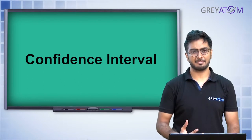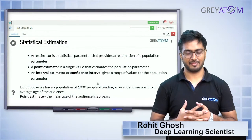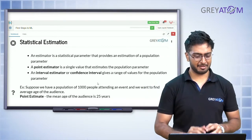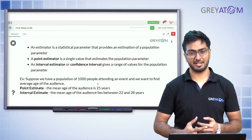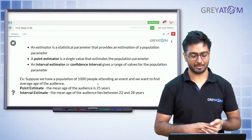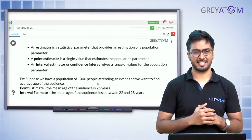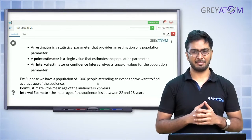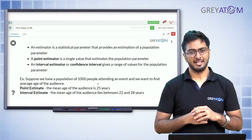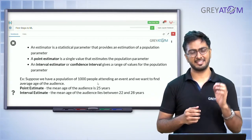We are starting with the next part of the lecture which is basically about confidence intervals. Before we understand what a confidence interval is, the basic concept to start off with is point estimator and interval estimator, also called confidence interval or range estimator. One easy way of estimating something about a population is saying that the sample mean is exactly the same as the population mean.